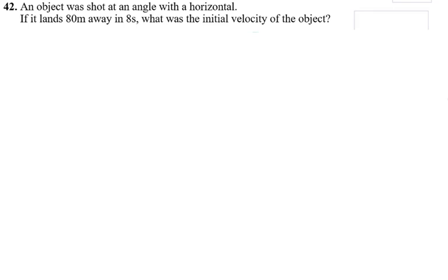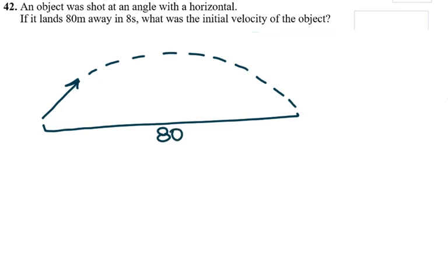So in this case, they say an object was shot at an angle with the horizontal, and if it lands 80 meters away in 8 seconds, what was the initial velocity of the object? So it was shot at an angle with the horizontal, so it's a projectile motion. It landed 80 meters away, so this is 80 meters, and it took 8 seconds to fall down. That means it took only 4 seconds to get to the top, and then 4 seconds to fall down.